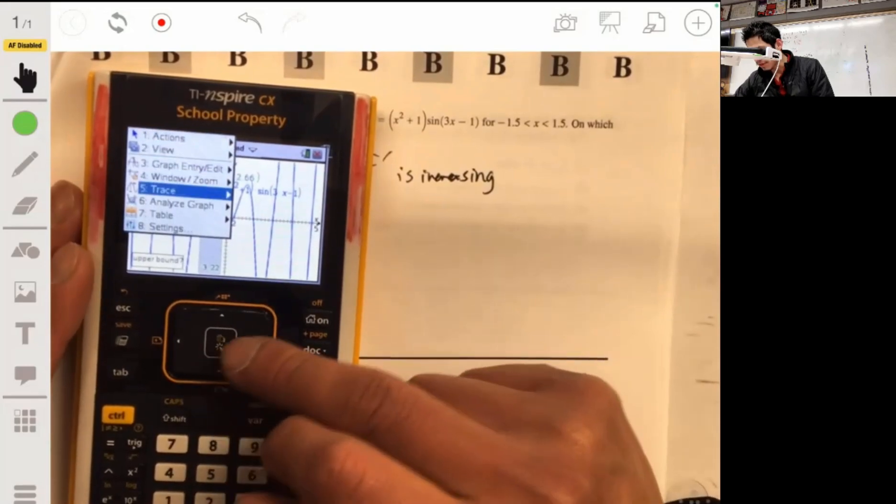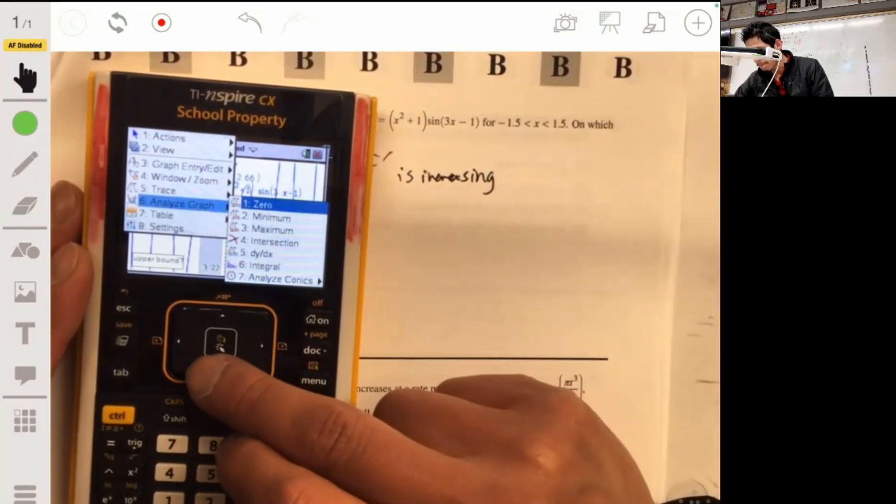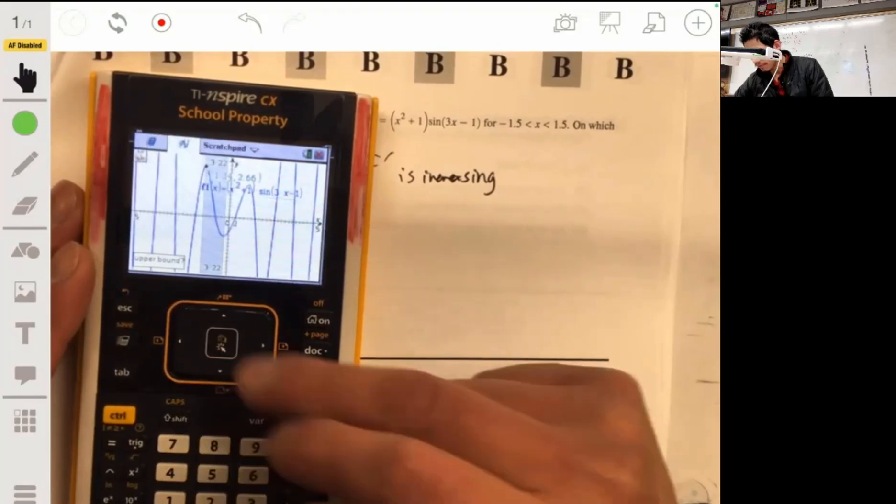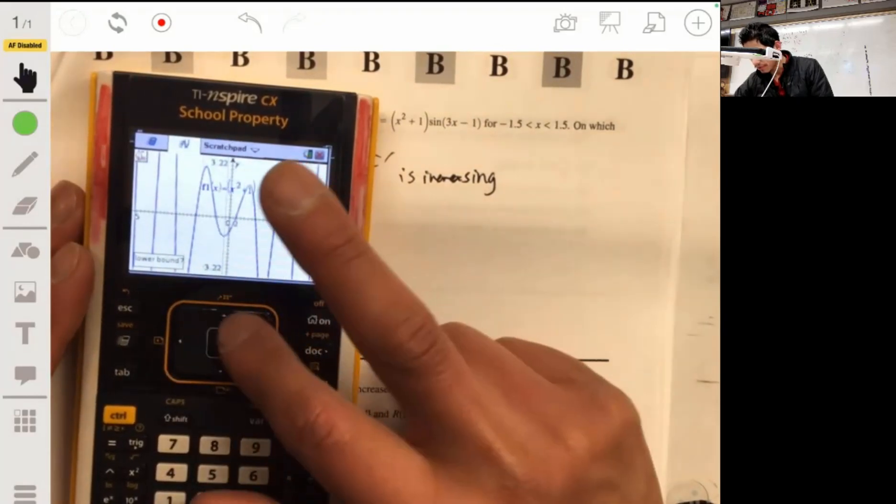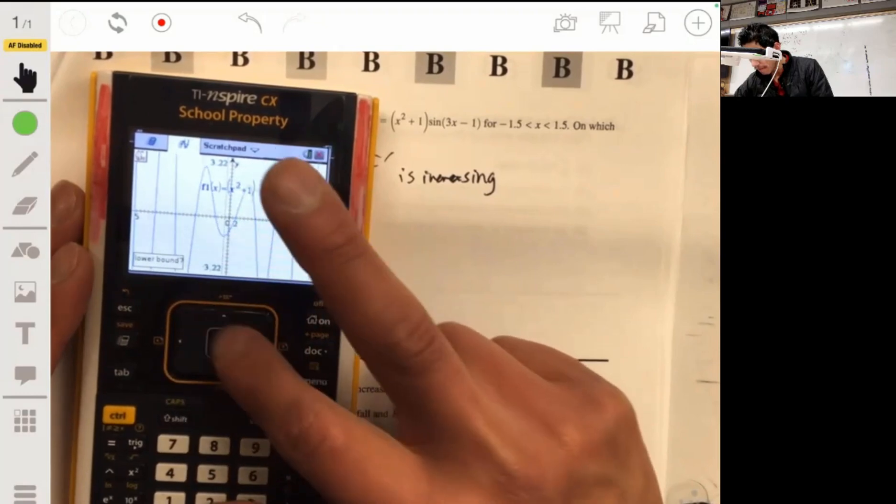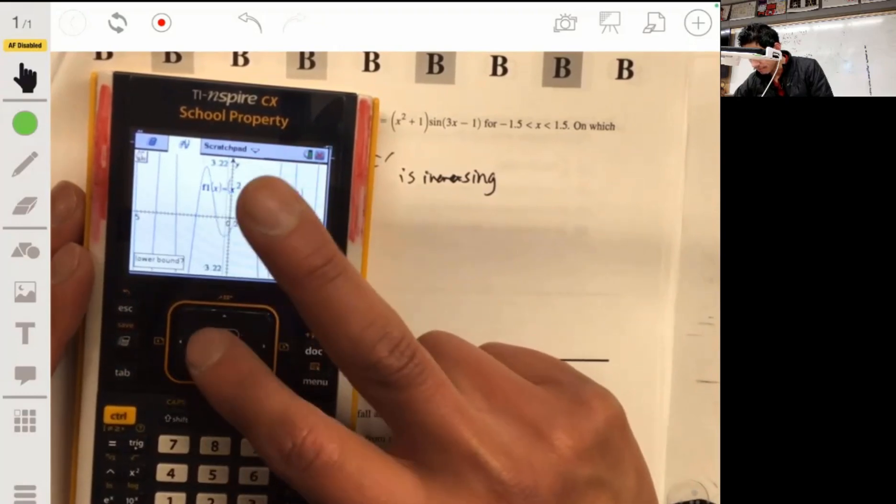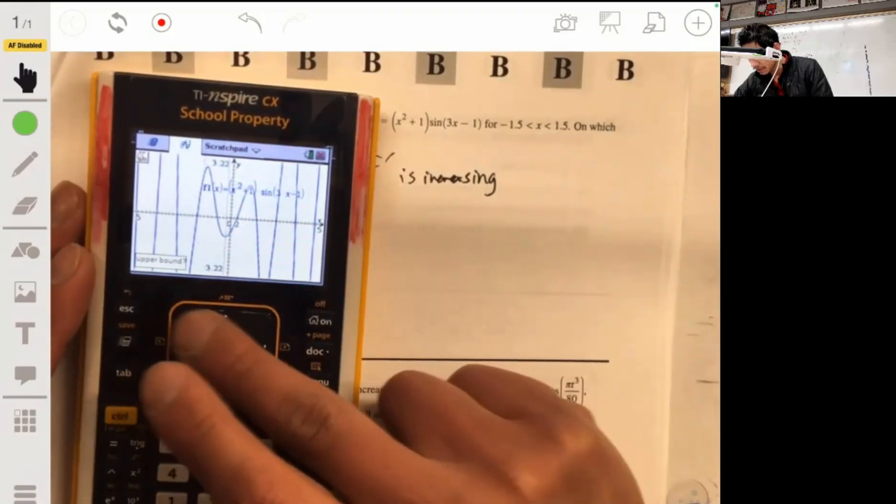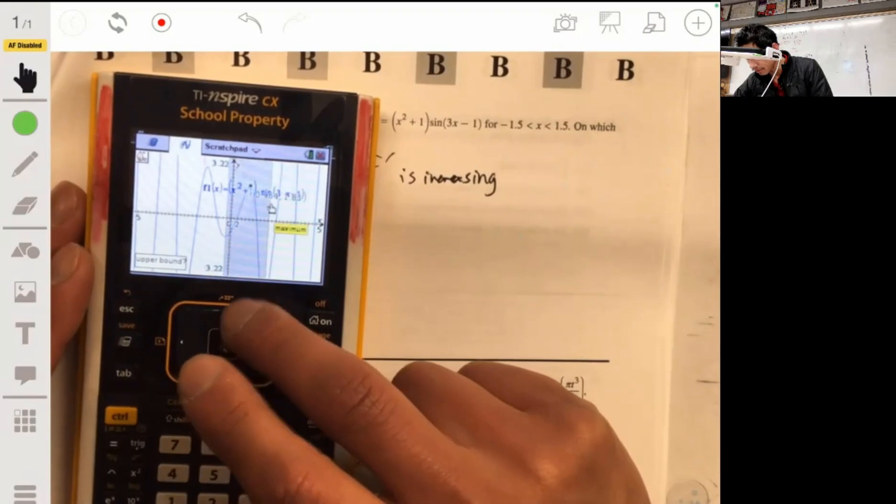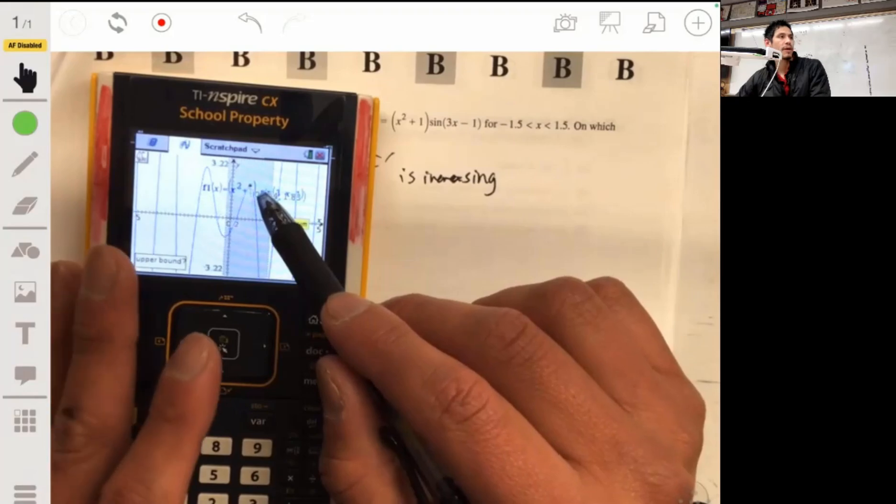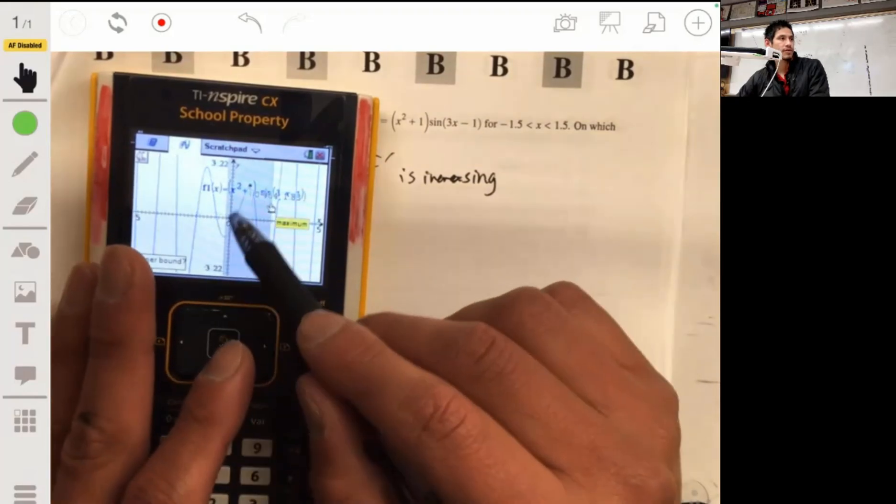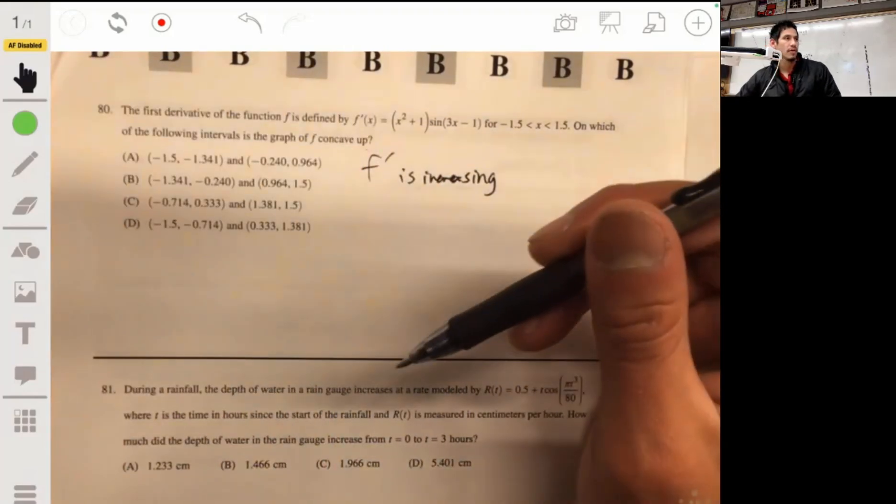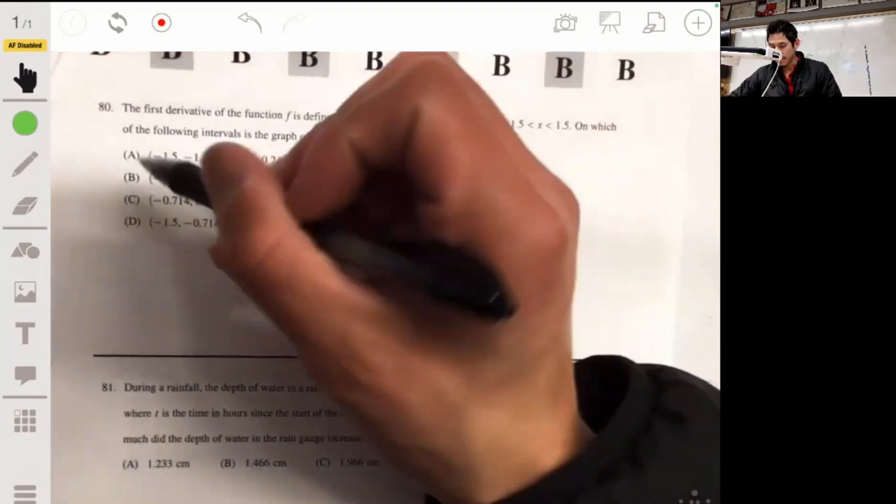We can just go ahead and analyze the graph just to make sure you really understand this. You have another local max about 0.964, so it's increasing on this interval there too. So then it's going to be A.